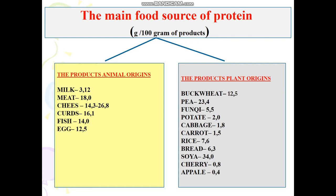Among plant-origin products: peas 23.4%, carrot 1.5%. The amino acid composition of plant-origin proteins is less complete; however, the inferiority of vegetable proteins can be compensated with a mixed diet and rational selection of a variety of plant and animal products. Among plant products, legumes contain a large amount of protein. Proteins in legumes have especially valuable amino acids such as tryptophan, lysine, and methionine — containing these amino acids even more than meat, and methionine in amounts comparable to meat.